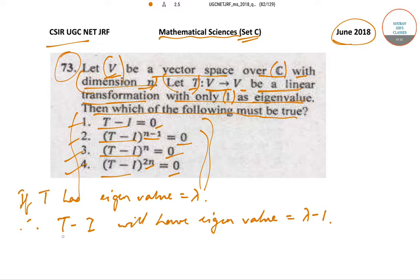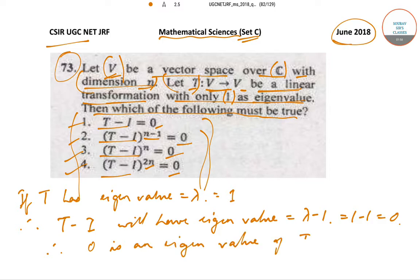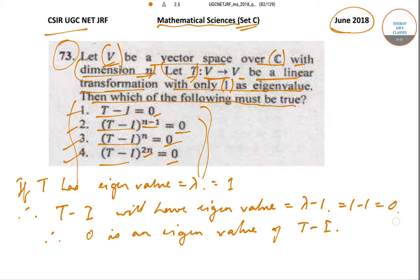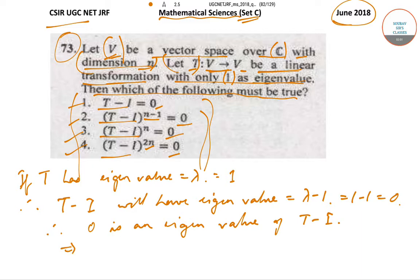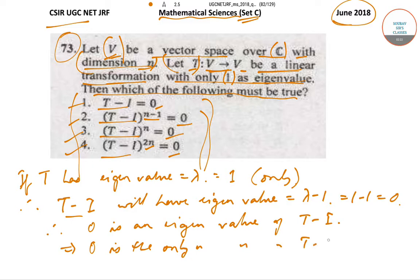Since T has eigenvalue equal to 1, that implies T minus I will have eigenvalue 1 minus 1, which is 0. So 0 is an eigenvalue of T minus I. Furthermore, since 1 is the only eigenvalue that T possesses, 0 is the only eigenvalue of T minus I.